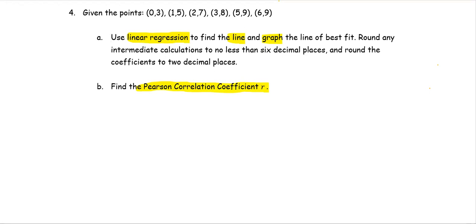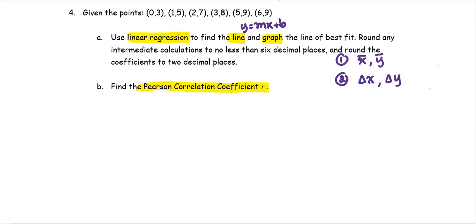To use linear regression to find the line in the form of y equals mx plus b, we follow steps 1, 2, 3, and 4. In step 1, we are going to find x̄ and ȳ, which are the averages of the x values and y values. In step 2, we are going to compute delta x and delta y, which are the difference of each x value and x̄, and the difference of each y value and ȳ. In step 3, we are going to calculate the summation of the product of delta x and delta y.